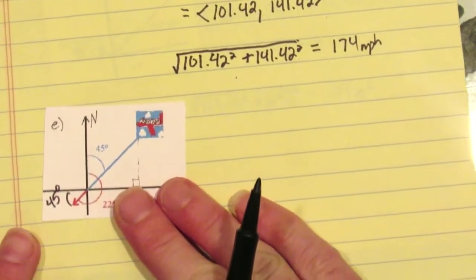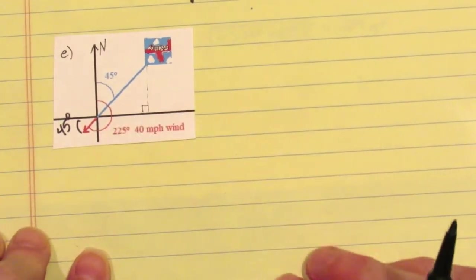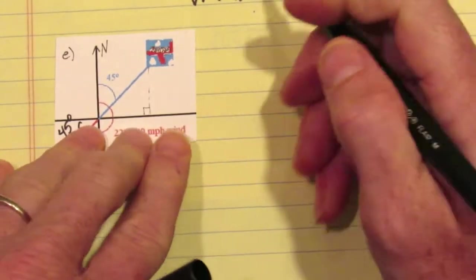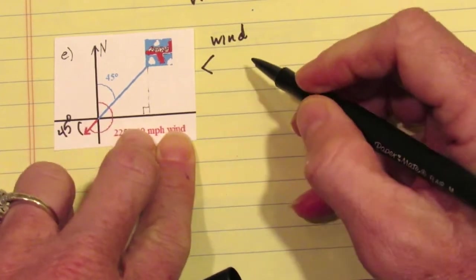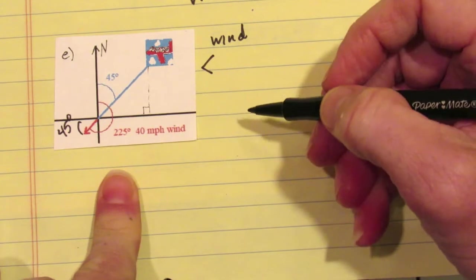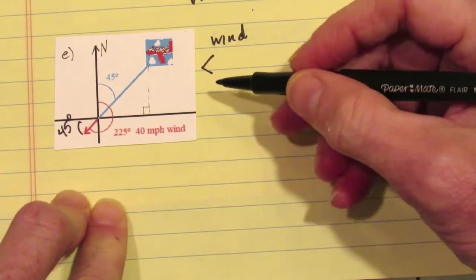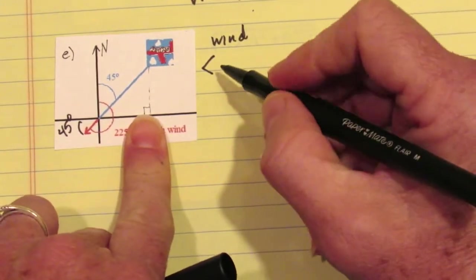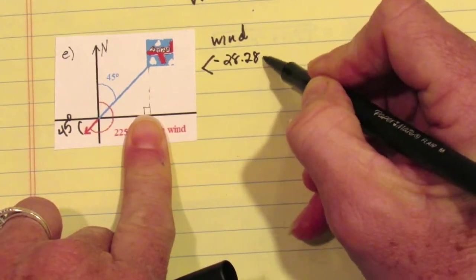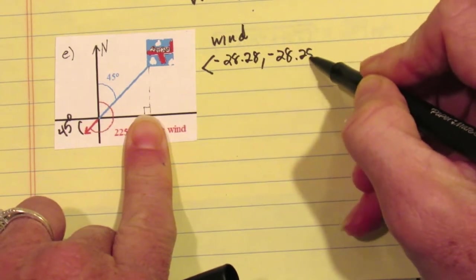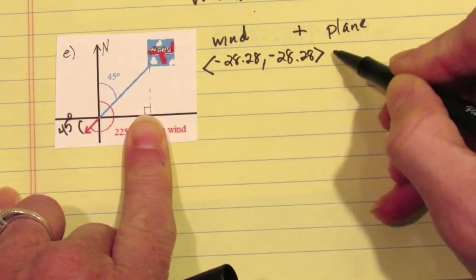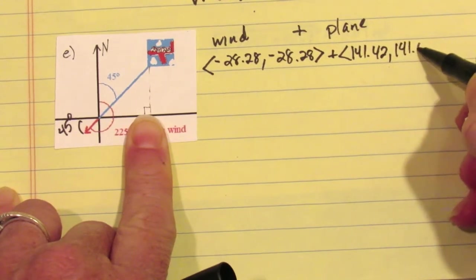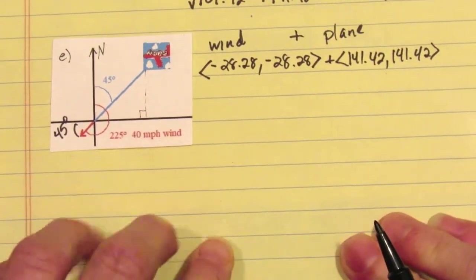What if the wind is blowing in the exact opposite direction to the plane? With a heading of 225 degrees — 225 measured from north points the vector 45 degrees in the southwest direction — the wind's x component is negative 28.28 and y is negative 28.28. The plane is still the same. The 28.28 comes from 40 times cosine or sine of 45 degrees, as we calculated earlier.